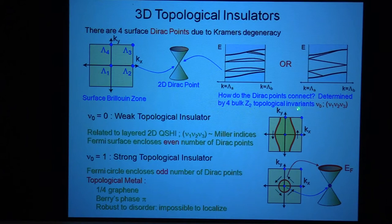The more interesting situation is the situation where what we call a strong topological insulator, where the Fermi surface just encloses, on the surface just encloses a single one of these Dirac points. And so this case is the case which is sort of more robust.